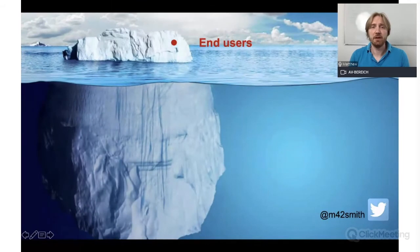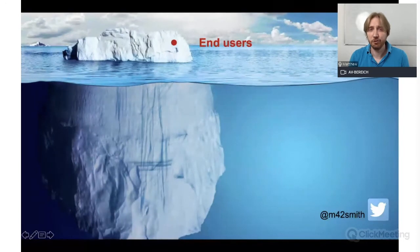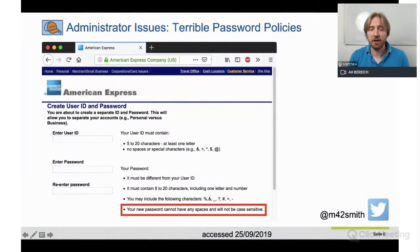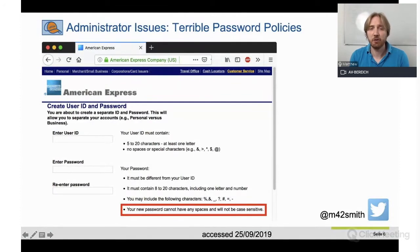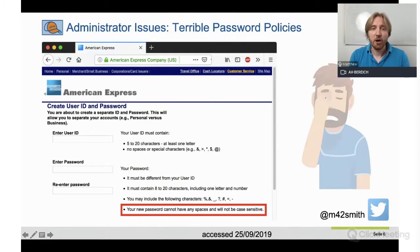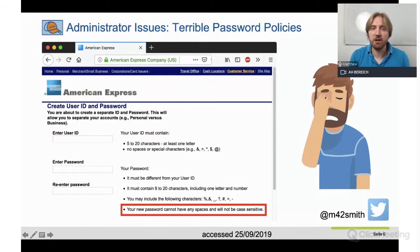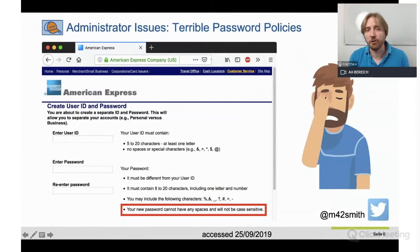One very typical example is passwords. We all know that end users have huge problems with password usage. But if you look under the water, you will see that there are a lot of other actors who actually have even more trouble. So administrators are responsible for setting password policies, and here's one lovely example from American Express which says that passwords won't be case sensitive. There's no need to reduce the password space like that, but it's a human mistake.